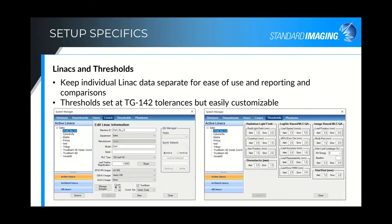Setting up your LINAC is very easy. You set your machine ID in your department, the manufacturer, and whether you have a 6D or 3D couch. On the right is the thresholds page, which defaults to TG142 recommendations but can be loosened or tightened as you see fit within your department — some tests you might want to tighten up, others you may want to loosen depending on your preferences.